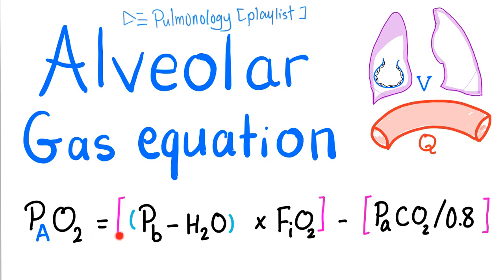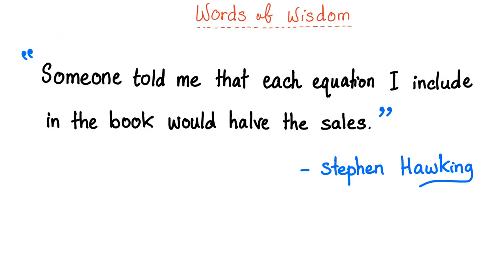You get the P big A O2 from the alveolar gas equation. You get the P small a O2 from the ABG. Then you subtract the P small a O2 from the P big A O2 to get the AA gradient. With that being said, let's get started.